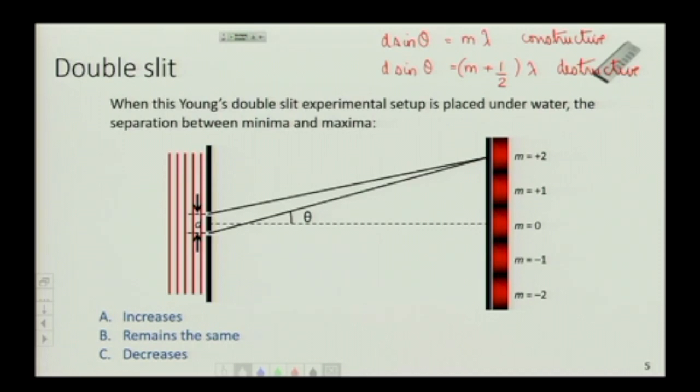So if the wavelength is smaller, what happens to the sine of the angle? It also gets smaller. For the sake of locating each fringe, the angle to locate each fringe is going to be smaller, and therefore the separation between the fringes is also going to be smaller.